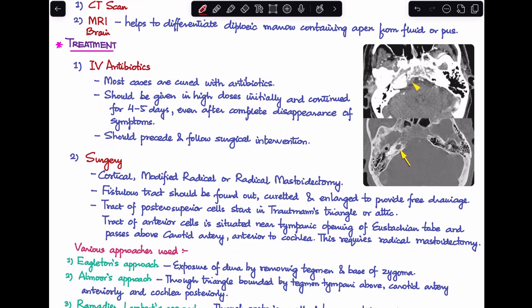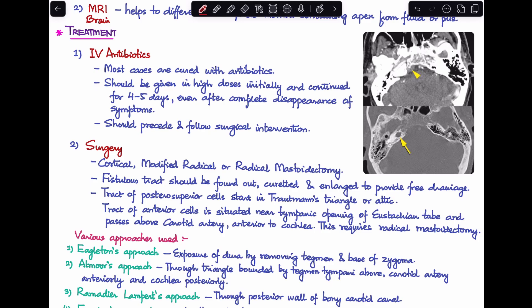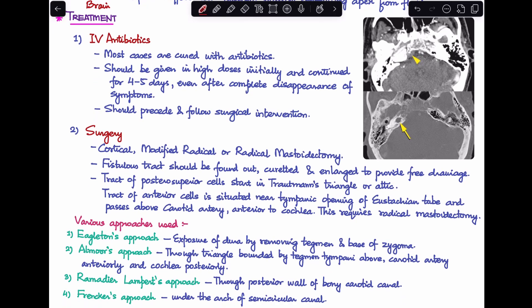Next, last of all, let's talk about the treatment. The first thing that you would have to do here is give a course of intravenous antibiotics. Most cases are usually cured with antibiotics nowadays. This should be given in high doses, and the antibiotics that are preferred are IV cephalosporins. This should be given in high doses initially and then you continue them for four to five days even after complete disappearance of the symptoms. IV antibiotics should precede and follow the surgical intervention that you take.